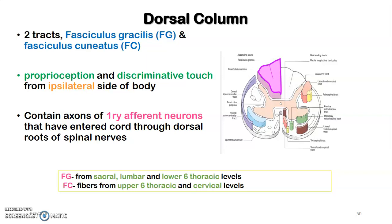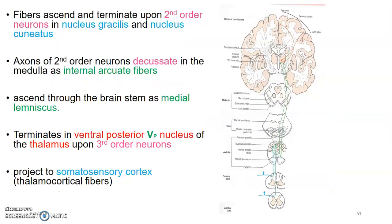Fasciculus gracilis and cuneatus contain axons of primary afferent neurons — the first-order neurons — that enter the spinal cord through the dorsal root of spinal nerves. Fasciculus gracilis carries information from sacral, lumbar, and lower thoracic regions below T6, while above T6 and cervical levels, that is carried by fasciculus cuneatus. The fibers ascend and terminate on the second-order neuron located in nucleus gracilis and nucleus cuneatus in the medulla oblongata.